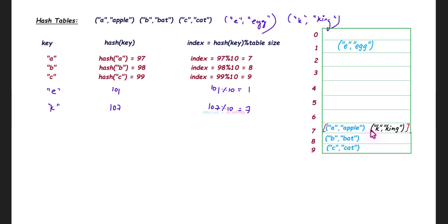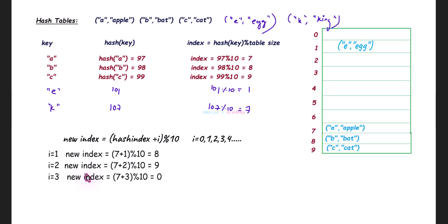If you want to use the open addressing method, you can use linear probing method or quadratic probing method. If I use linear probing method, you need to check for the next slot using this formula. If it's not empty, go for the next slot. If not empty, go for the next slot. And when it is empty, store the key-value pair there.